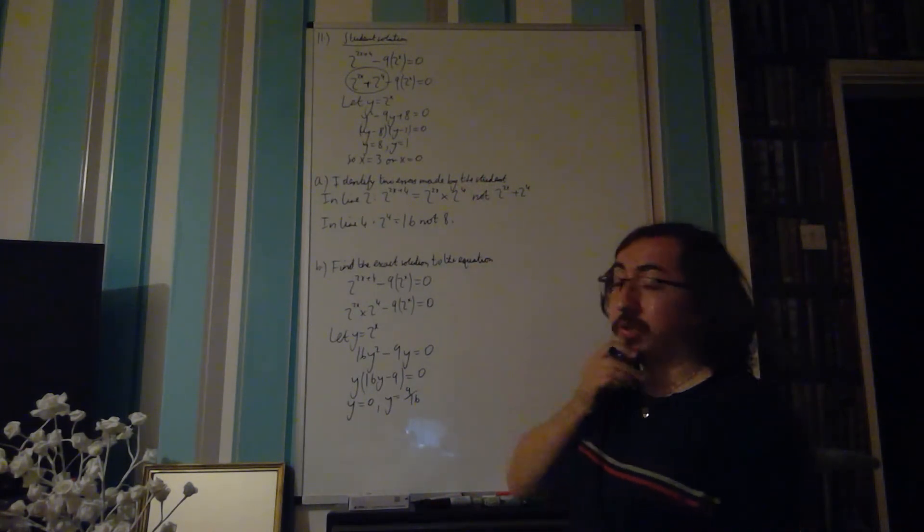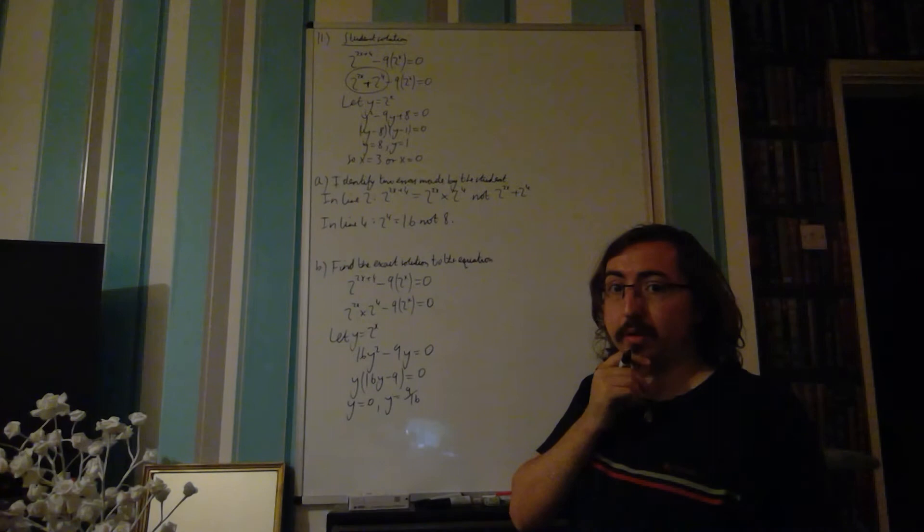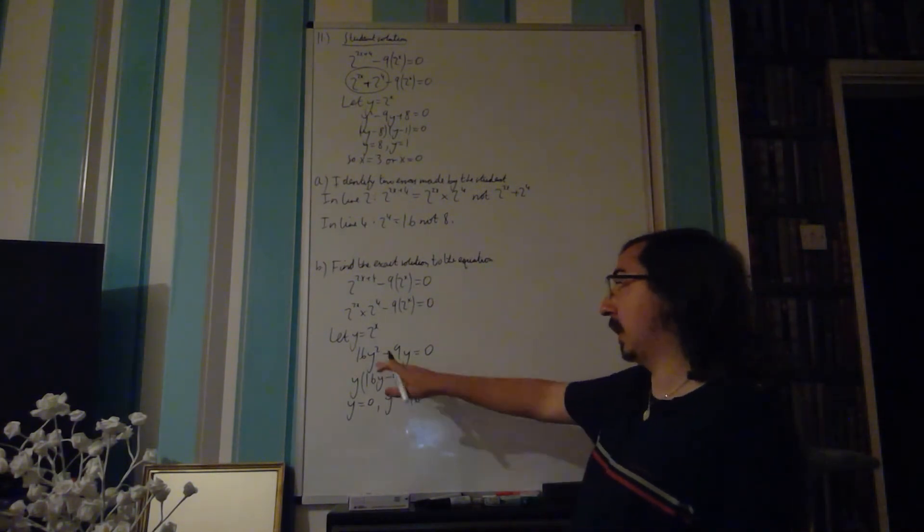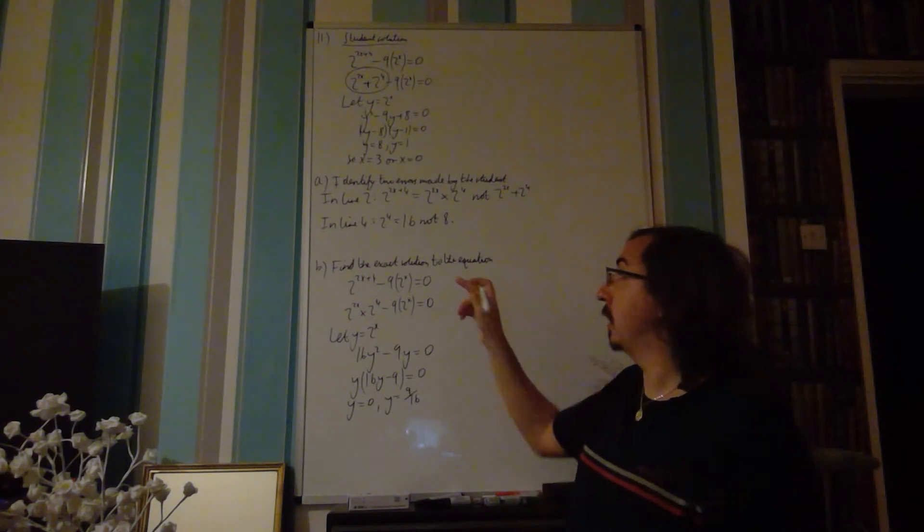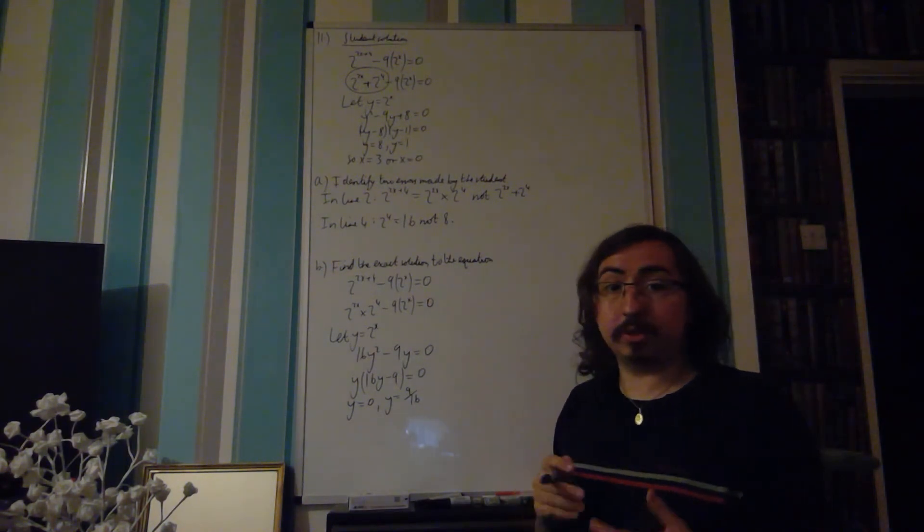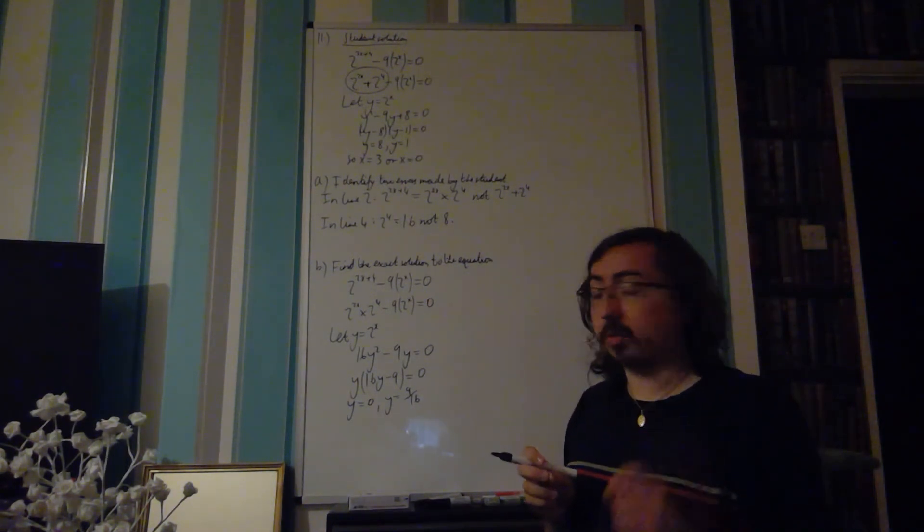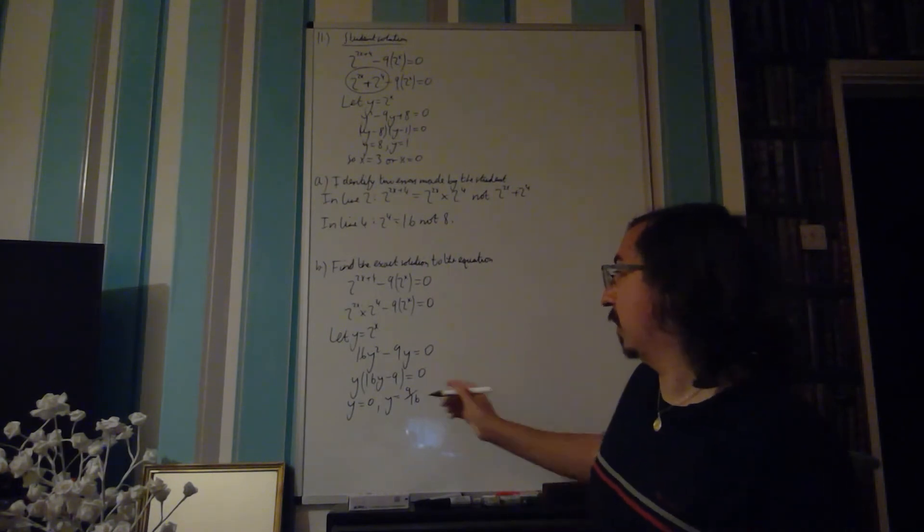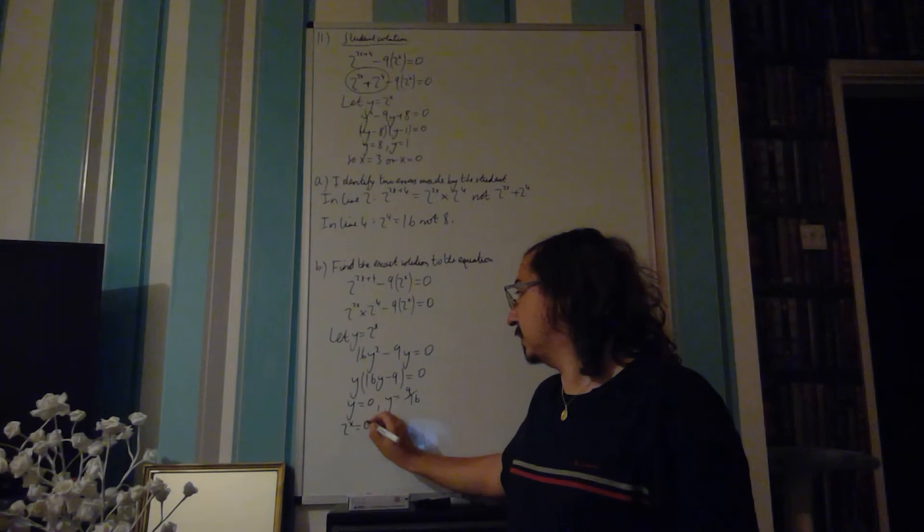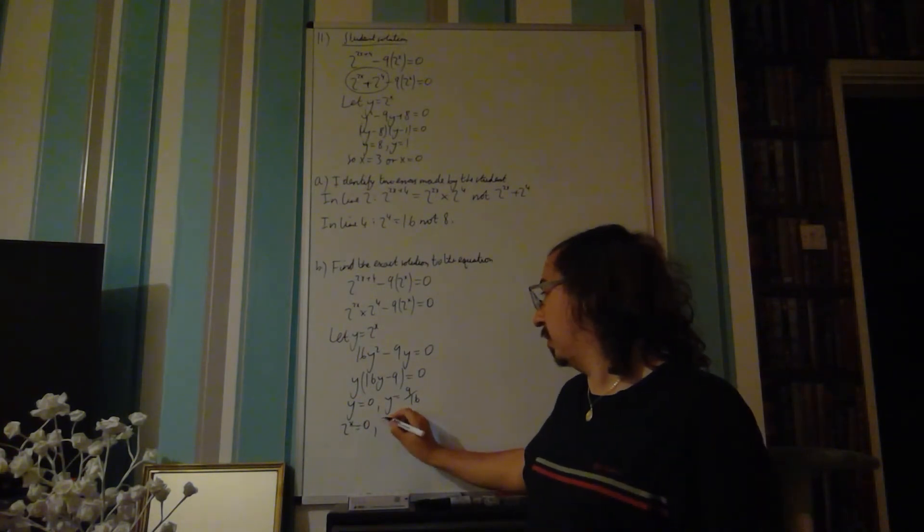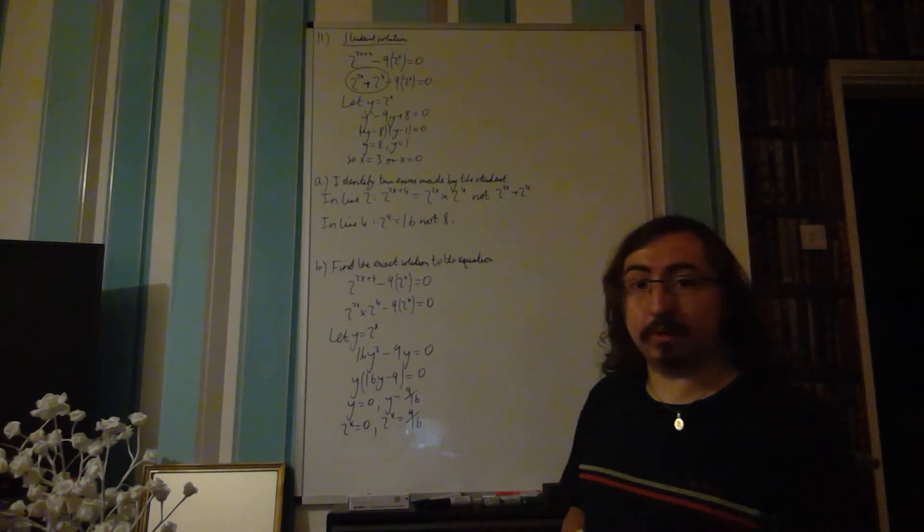Now, looking back at the student solution, that should be a little bit of a clue. We've not quite finished, because yes, we have solved for y, but we haven't actually solved for x. And as our original equation is given in terms of x, that is what you should be solving for. So let's replace our line and say, therefore, 2 to the x is equal to 0, and 2 to the x is equal to 9 over 16.